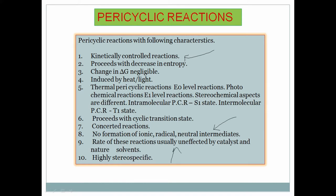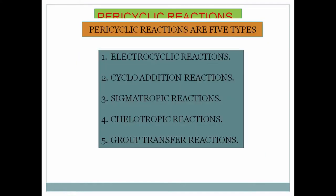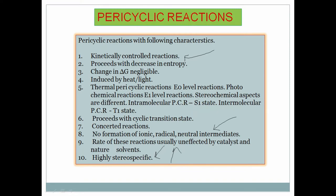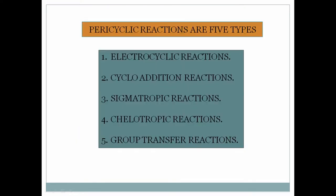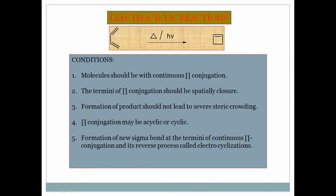The products are highly stereospecific. Pericyclic reactions are of five types: first, electrocyclic reactions; second, cycloaddition reactions; third, sigmatropic reactions; fourth, chelotropic reactions; and fifth, group transfer reactions. Today I am going to discuss about electrocyclic reactions.